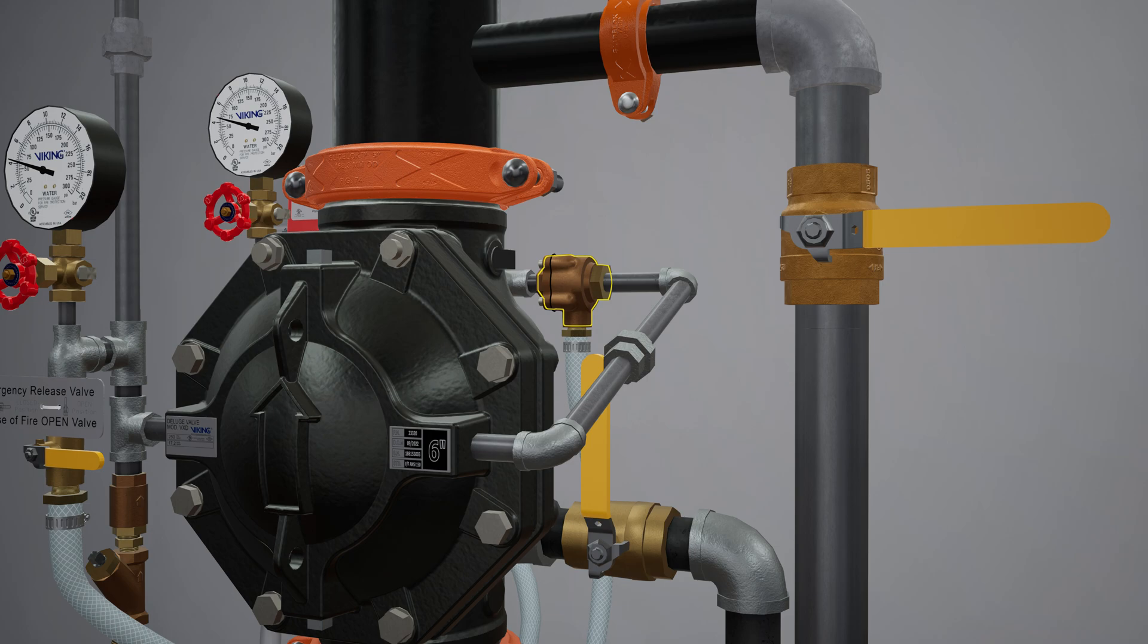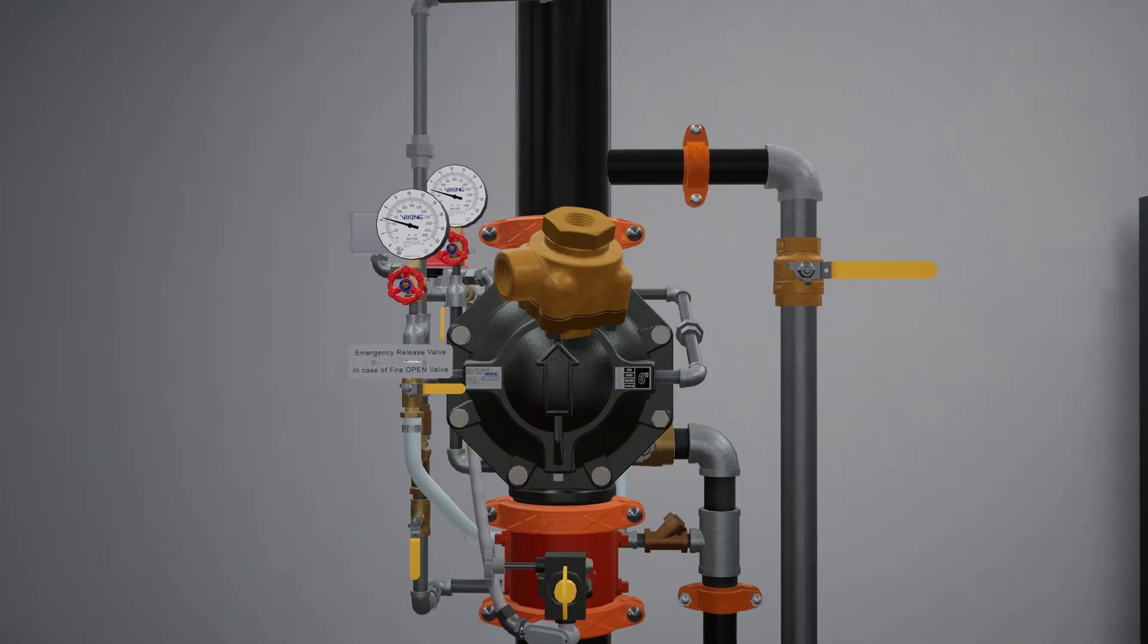Following the trim off the prime chamber is the Pressure Operated Relief Valve, or PORV. The PORV is a device that ensures the valve remains in an open state while water is flowing through the valve.